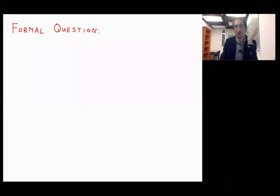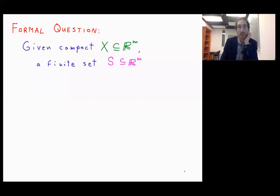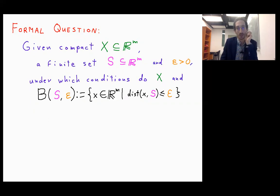So the formal question: we have a compact set X in ℝ^m, we have a finite set S in ℝ^m, this will be our sample of the set X, then we have an epsilon bigger than zero, and then the question is under which conditions do X and B(S,ε)...